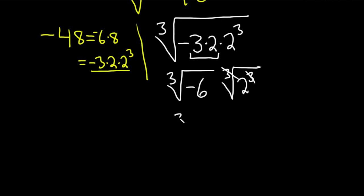So that's going to be cube root negative 6 times 2. So we can do a couple things here to make our answer a little bit better. We can put the 2 in the front, which we will. And also this negative here, because it's an odd root, we can pull out the negative 1.